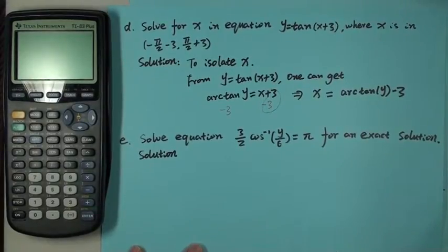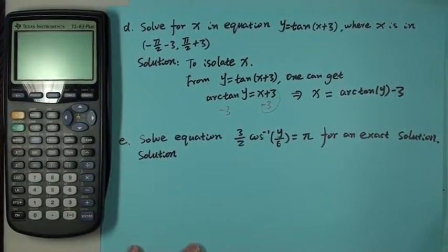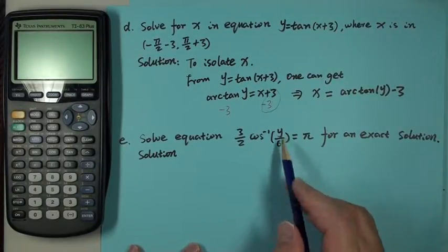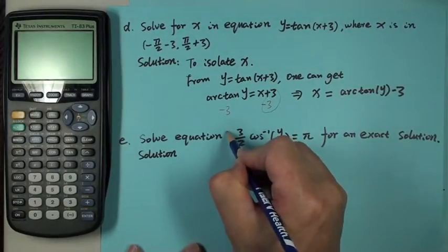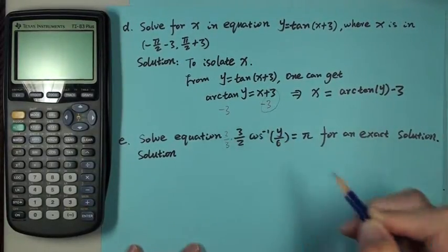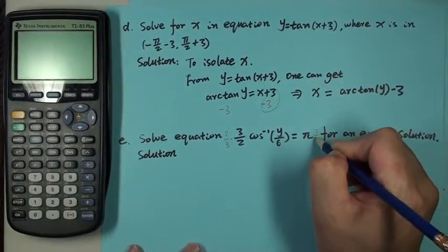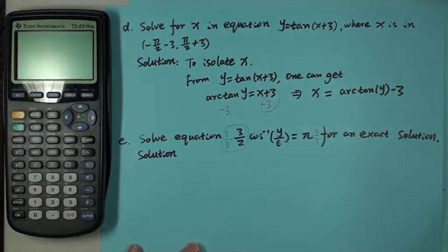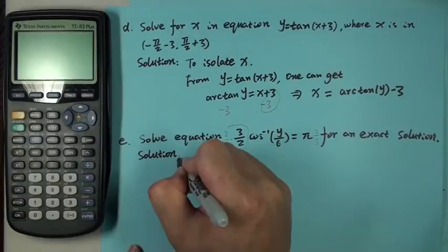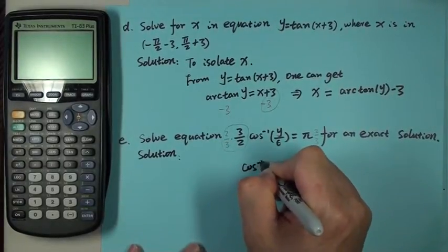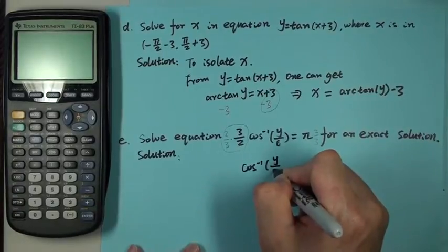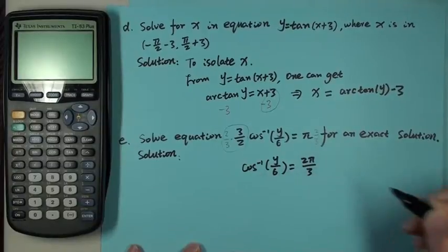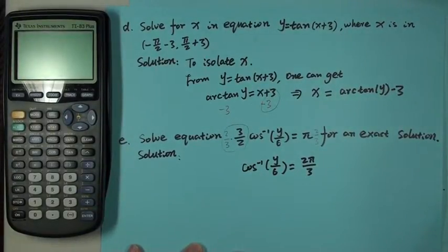Let's look at the last one. It won't take long. For this one, we want to find value y, so we multiply by 2 over 3 here, times 2 over 3 here, then you can cancel this one. So what do we get? We then get cosine inverse y over 6 is 2π over 3.